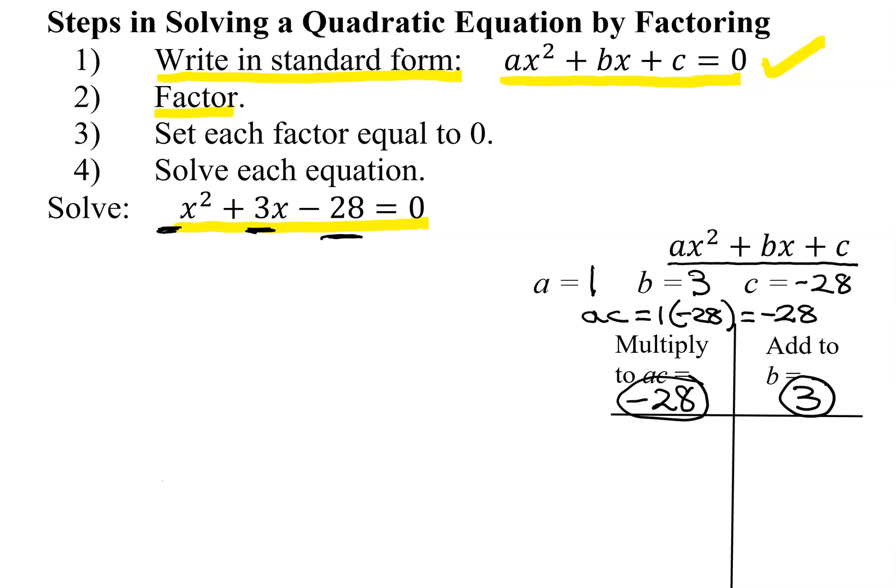So I'm going to start with negative 1 and 28. That definitely multiplies to negative 28. But when I add them together, I get positive 27, not 3.